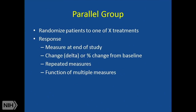In a parallel group design, the idea is that I'm going to randomize patients to one of X treatments — one of two treatments, one of four treatments, however many — and look for some response. I'll measure them at the end of the study, compare how everybody is at the end of one year, or look at a change or percent change from baseline. I may also look at repeated measures — for example, taking blood pressure every four weeks and looking at the change in systolic blood pressure over time. That's called repeated measures.